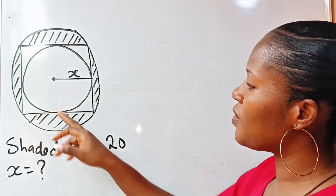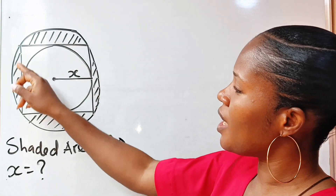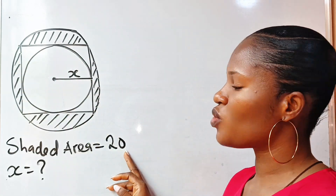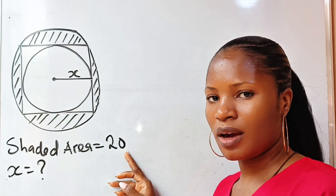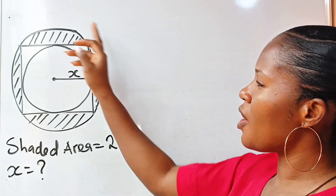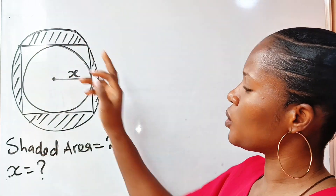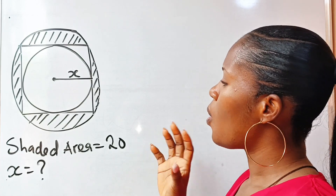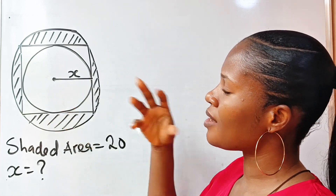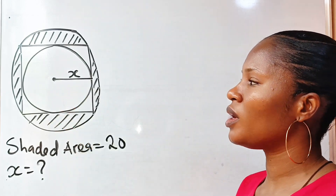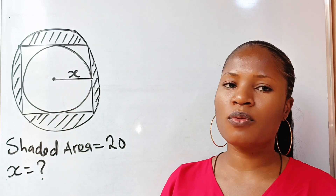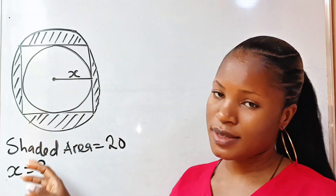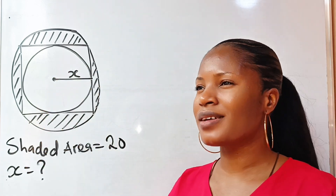Now, the question says that if the shaded area is 20, that is the area of the shaded portion is 20 units squared. We are asked to find x, and x happens to be the area of the smaller circle.